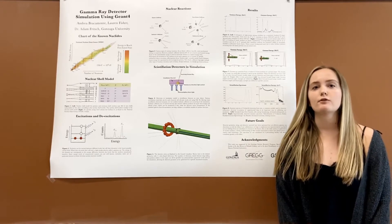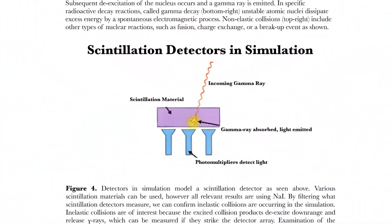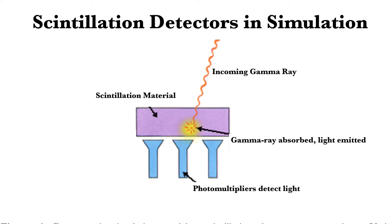As seen in figure four on our poster, our simulation uses a sodium iodide simulation detector. Once the particle enters the detector, the gamma ray is absorbed by material and converted to light, then measured by photomultipliers.